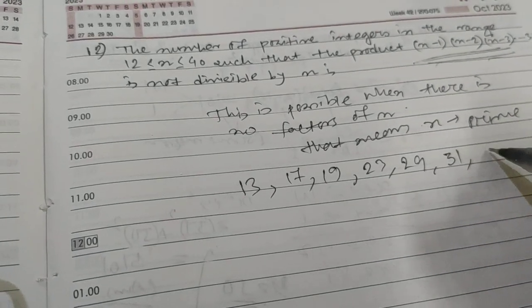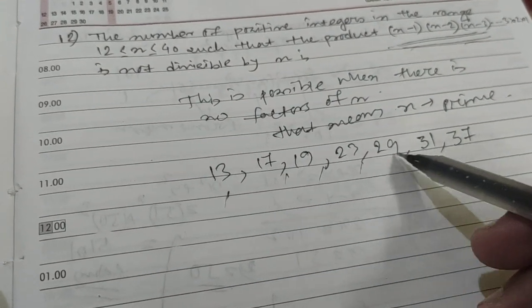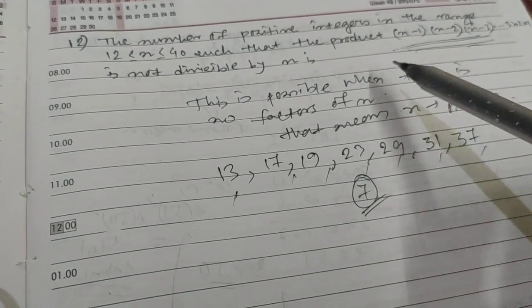then 29, then 31, then 37. That's 1, 2, 3, 4, 5, 6, 7 - so a total of seven prime numbers.